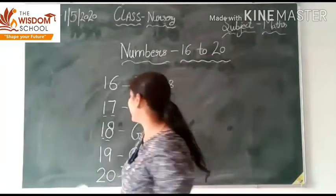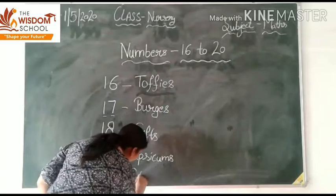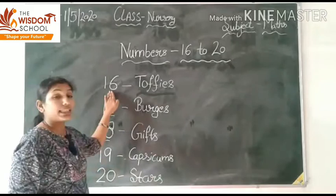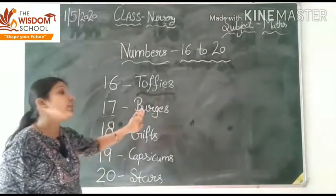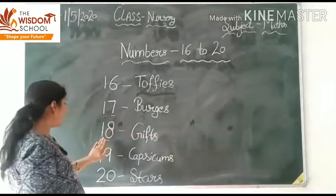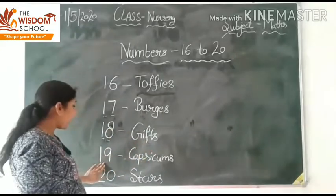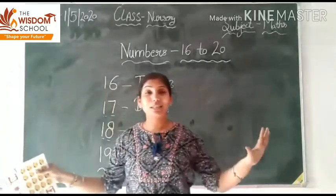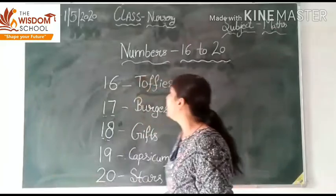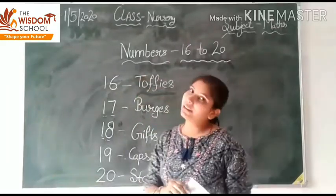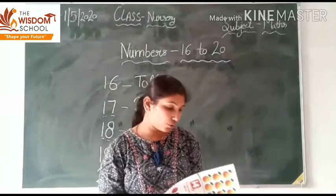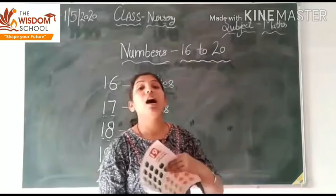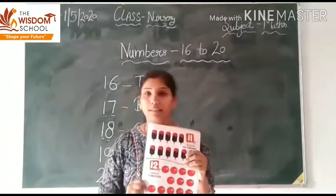Okay, 20 stars. आज हमने क्या क्या count किया? Kids, आज हमने 16 toffees, 17 burgers, 18 gifts, 19 capsicums, and 20 stars count की आज हमने, right? Okay, so अभी एक बार हम 11 to 20 तक Revision करेंगे. And next time हम 1 to 20 का full revision करेंगे. Okay?